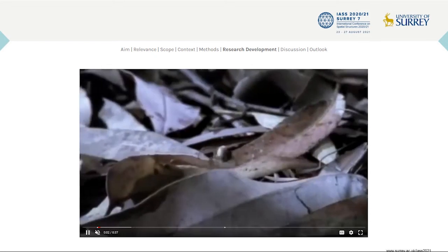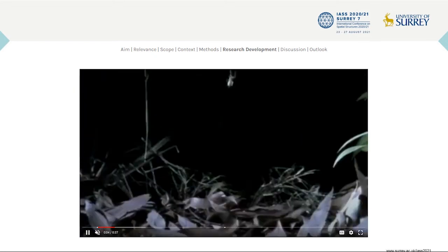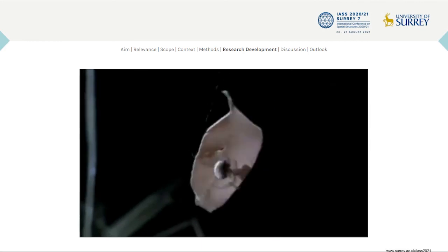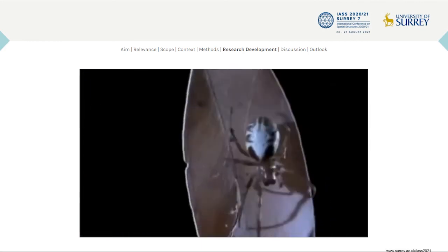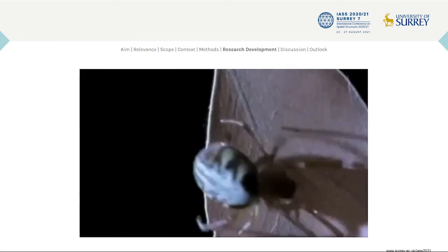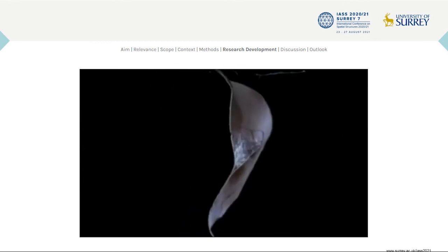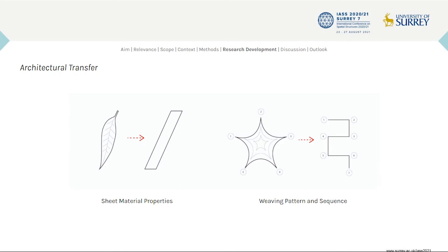The Australian curly-leaf spider was selected as a biological role model because it uses multiple materials to create a hybrid system with silk and found objects. The spider collects lightweight objects such as a leaf, suspends it in a web, and weaves silk around it to bend it into a shelter. Observation of the spider's leaf bending process shows that the types of shelters created are affected by biomechanical properties of the leaves, properties of the silk, and the spider's weaving behaviors.